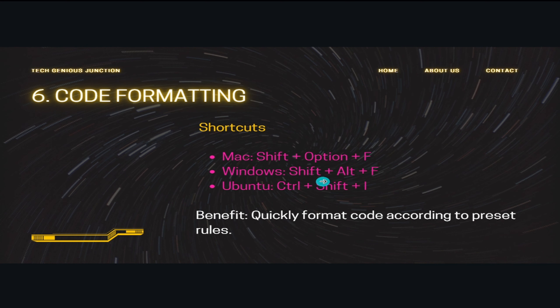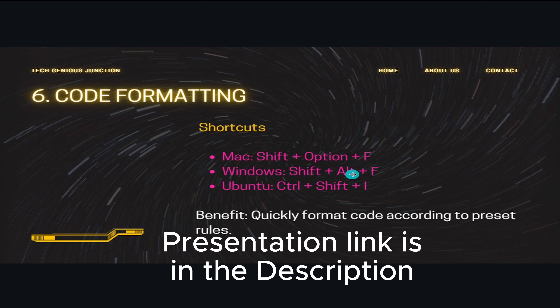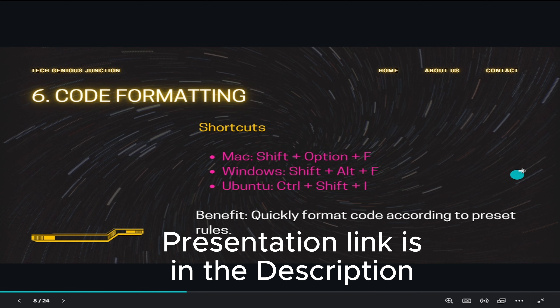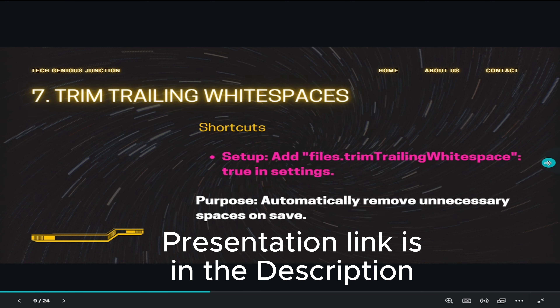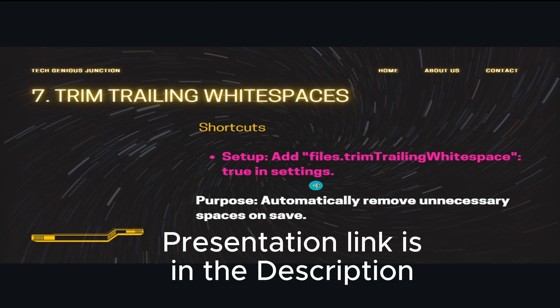The next shortcut is code formatting. On Windows you use Shift+Alt+F and on Mac you use Shift+Option+F to auto-format your code. You can also trim trailing whitespaces by configuring it in the settings to automatically remove unnecessary spaces.